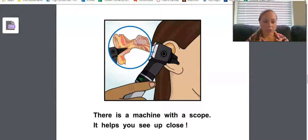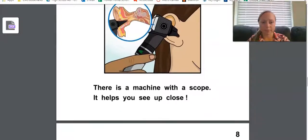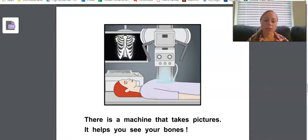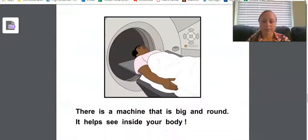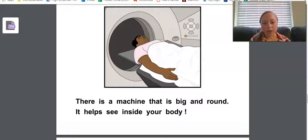There is a machine that gives out air. It helps you breathe. There is a machine with a scope. It helps you to see up close, kind of like a microscope. There is a machine that takes pictures. It helps you see your bones. There is a machine that is big and round. It helps see inside your body.